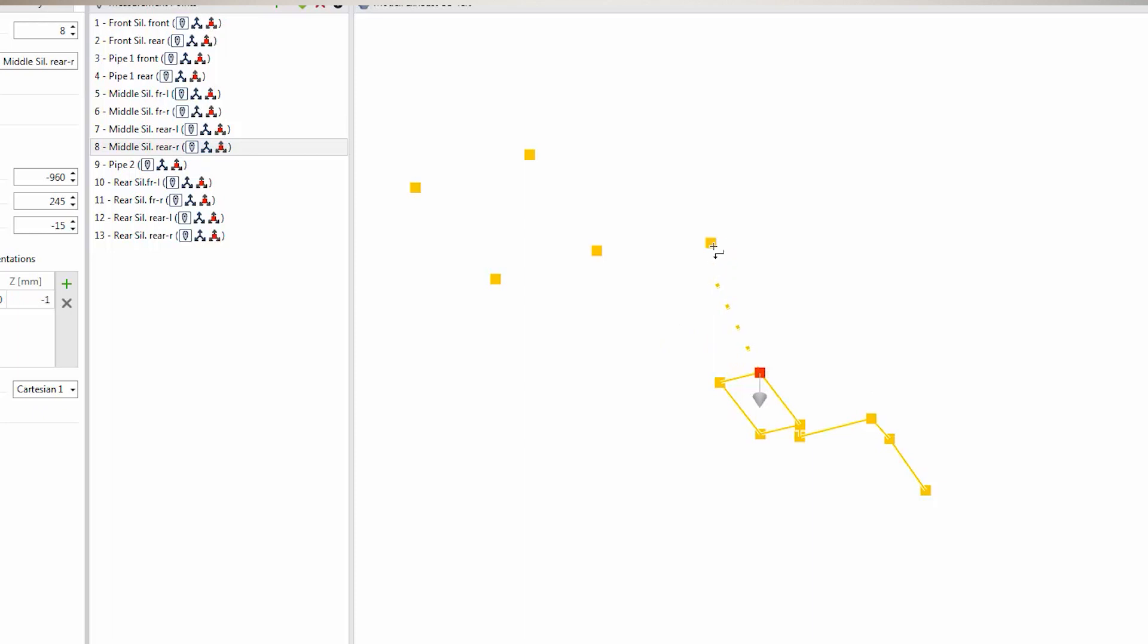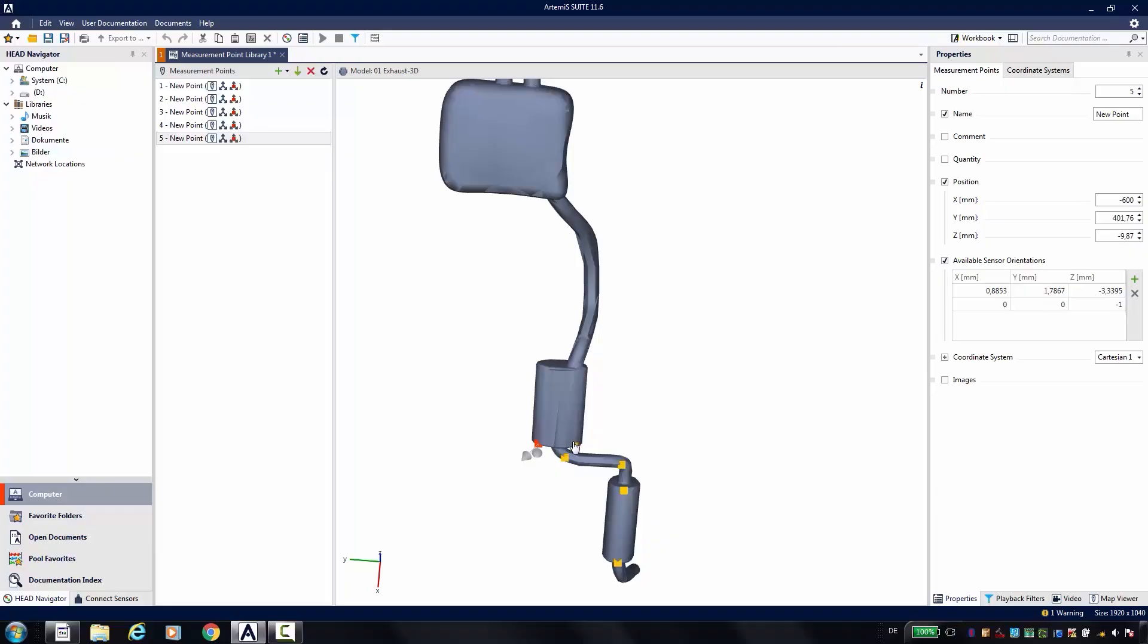I can then transfer these points into a 3D model. I need them all anyway in the end for the animation, so I'll do that right away. Either you make a simple grid point model, or much more elegant and much faster, you simply take a 3D model, either from your colleague from the design department or you just download something suitable from the internet.